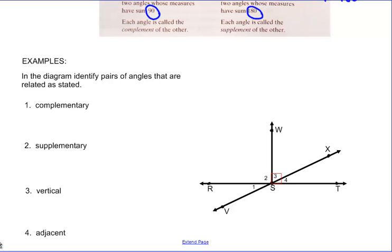We're going to look at this diagram. It says in the diagram, identify pairs of angles that are related as stated. So number one, you have to find some complementary angles. Now don't forget these are two angles that add to 90 degrees.